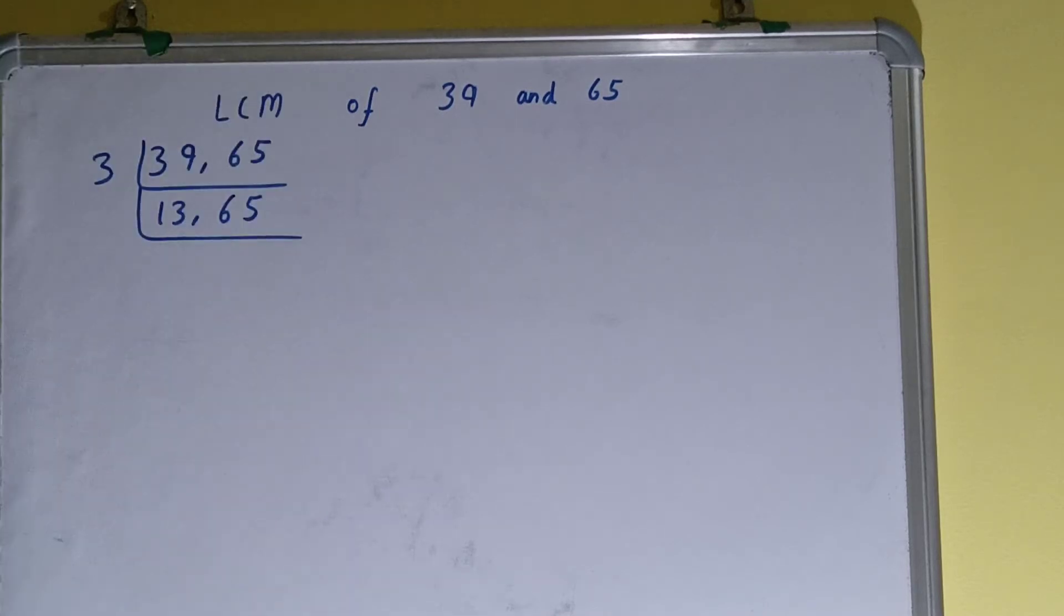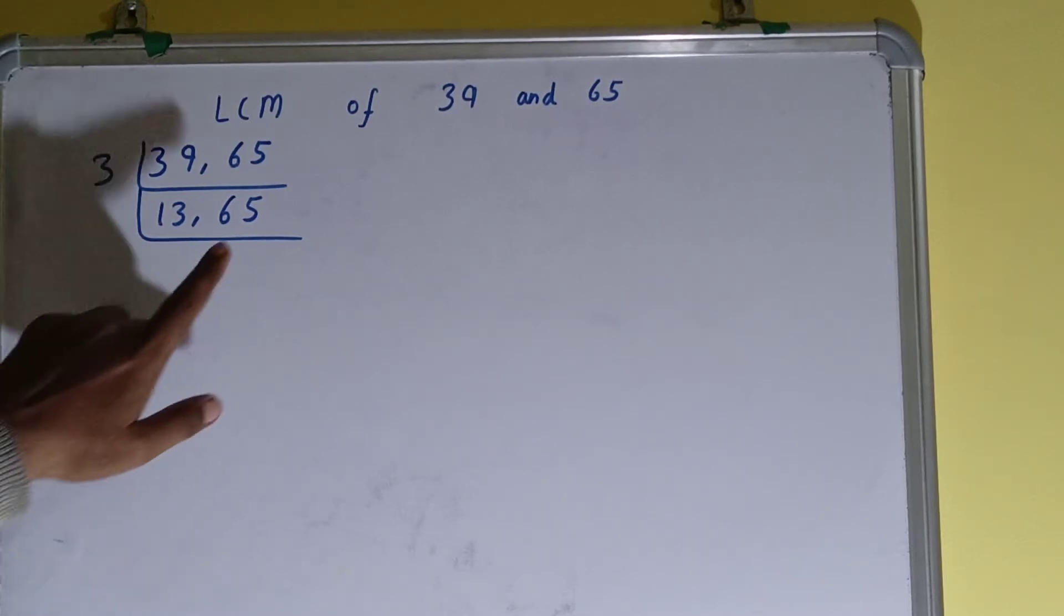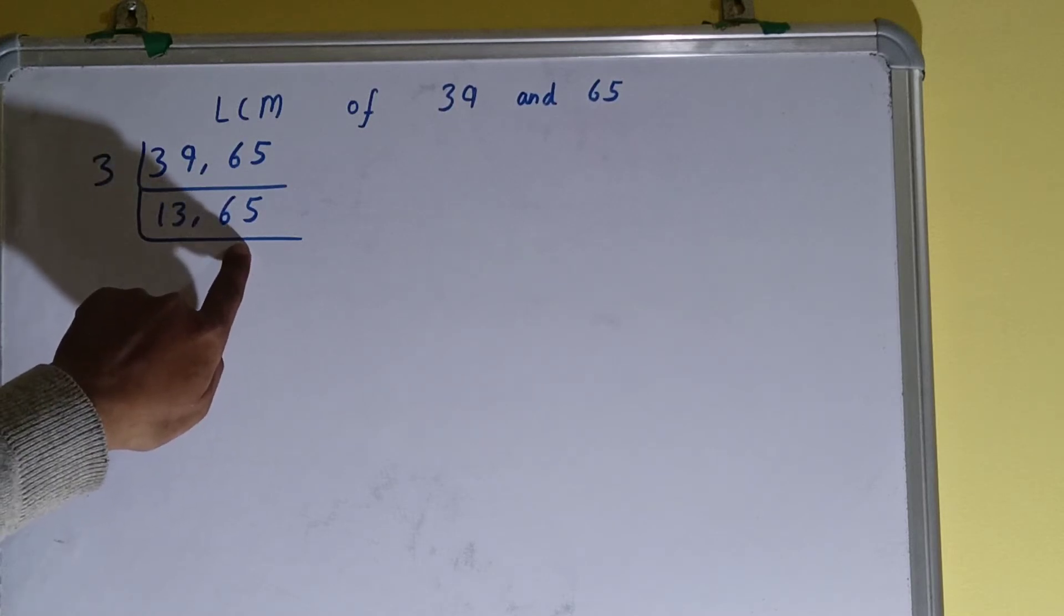Again we'll check if any of the numbers is divisible by 3. None of the numbers, so we'll go to the next lowest prime number, that is 5. If we check, then only the second number can be divided this time by 5, not the first one.